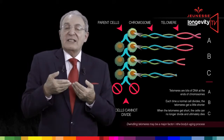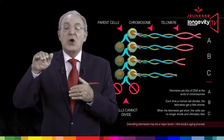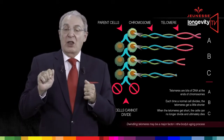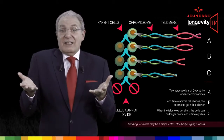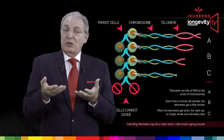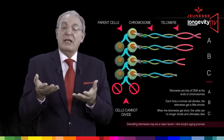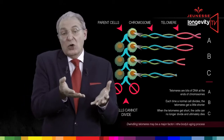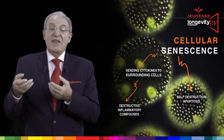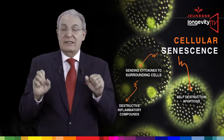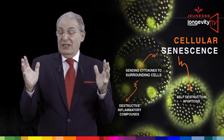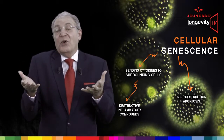Meanwhile, after 50 to 70 divisions, the cells in our body reach a stage where there are no more telomeres to protect our DNA. Those cells can no longer reproduce themselves — they reach what we call a retirement-like state in which they die or no longer divide. This endpoint is called senescence, and when senescence reaches a majority of cells, we die of old age.